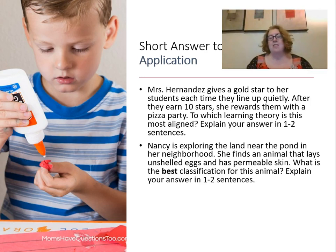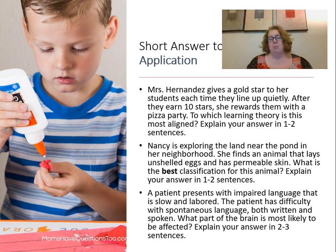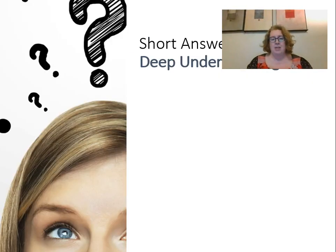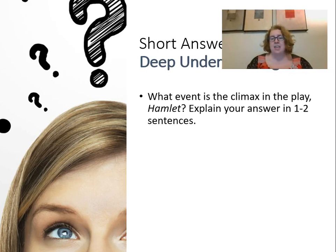Another example: 'Nancy can explain the land near her pond in her neighborhood. She finds an animal that lays calcified eggs and has permeable skin. What is the best classification of this animal? Explain why.' In each of these examples, I'm giving students clear guidelines about how long their answer should be — a situation, a question, and a length expectation.